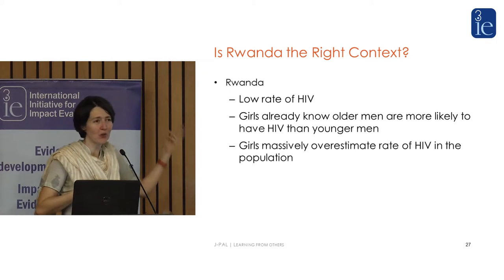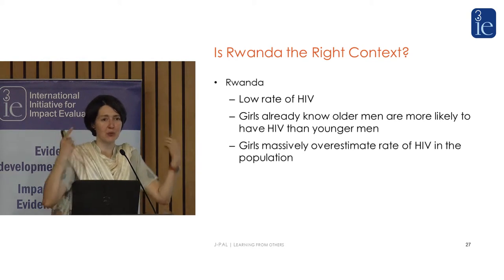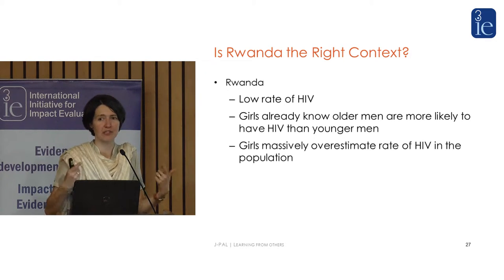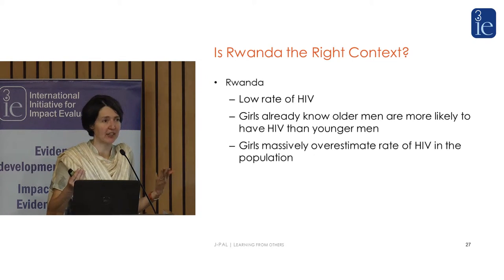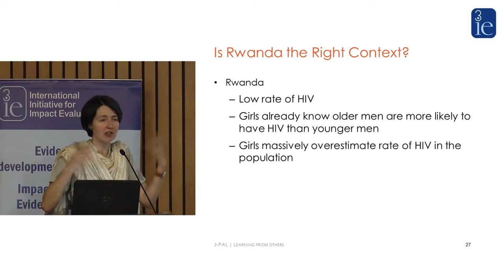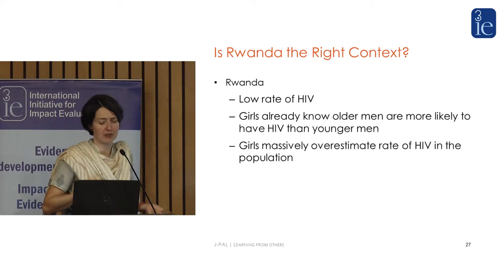What I want you to take away is that when we talk about what's the relevant context, we've got to think about the theory, and then use local descriptive evidence to think about whether it's relevant. It's not about whether they're close geographically — Rwanda is quite close to Kenya — but you want to ask whether they're similar on the specific things that drive the theory of change.